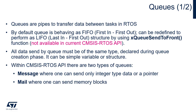Queues are pipes to transfer data between tasks. In FreeRTOS and RTOS in general, data transfer can also be done from an interrupt to the queue. In this case, the interrupt operating on the queue must have the correct priority number — not higher than specified as max syscall within the FreeRTOSConfig.h file.